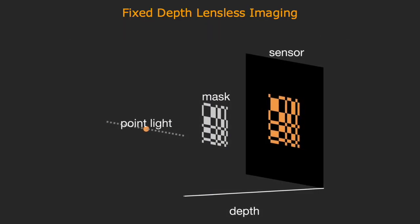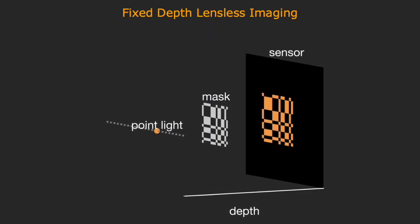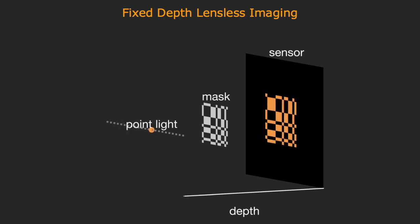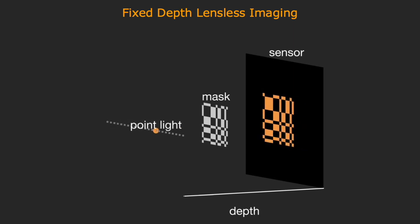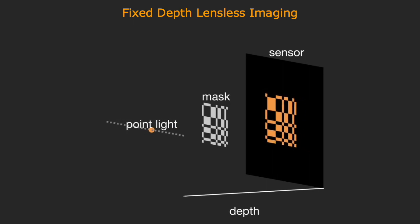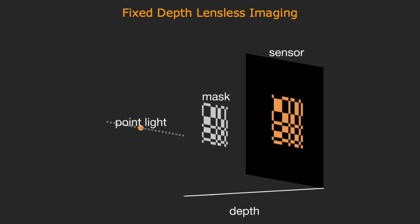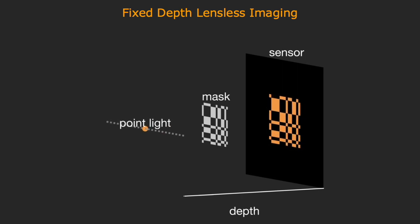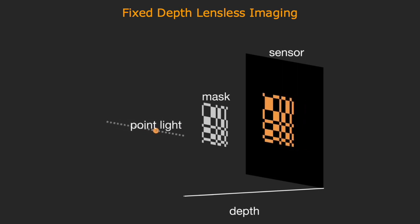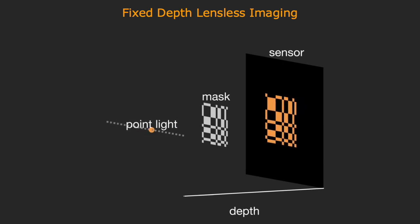Let's understand why it's challenging to reconstruct a depth-varying scene from lensless imagers. For an amplitude-mask lensless camera, the measurements of a point light source are shadows of the amplitude mask. When the points are on the same depth, the point spread functions are translated copies of each other, and simple deconvolution is often sufficient to reconstruct the scene.